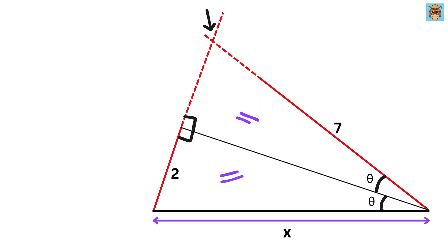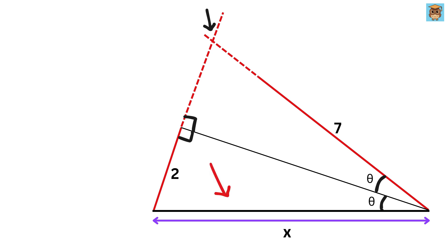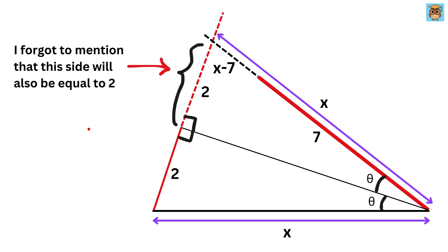Now consider both these triangles. They both have this same angle Theta, then this angle 90 degrees is also the same, and then this is the common side for both these triangles. Therefore, using angle-angle-side congruence criterion, both these triangles are congruent, so if this is X, then this side will also be equal to X. Now this length is 7, and thus this side will be equal to X minus 7. That is simply amazing!